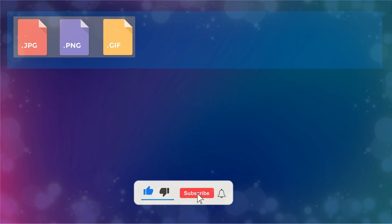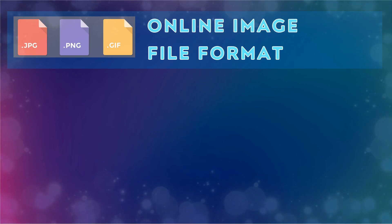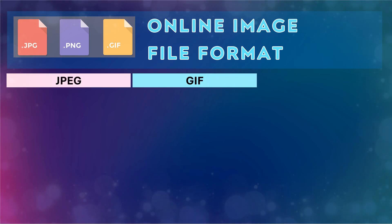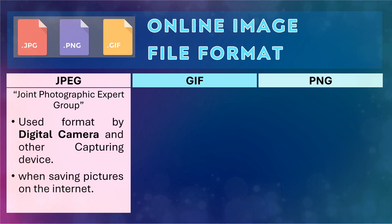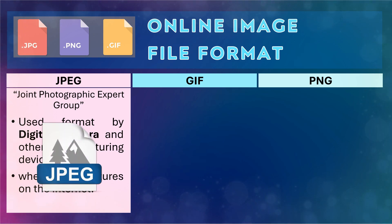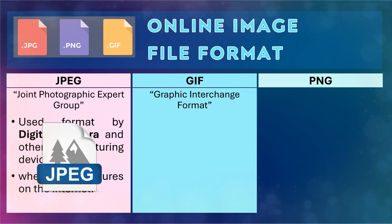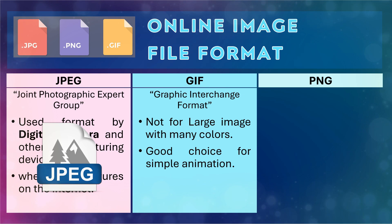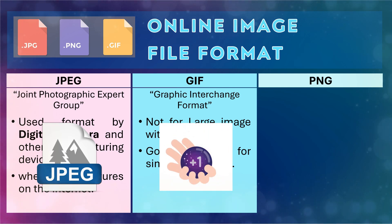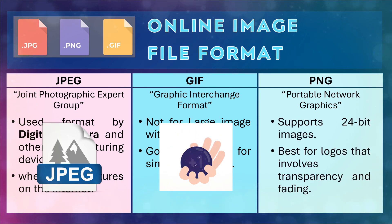Images have a format, and we must know what online image file formats are usually used. The commonly used are JPEG, GIF, and PNG. JPEG stands for Joint Photographic Expert Group — it is the most common format used by digital cameras and other capturing devices, and the common format when saving pictures on the internet. GIF stands for Graphic Interchange Format — not recommended for large images with many colors, the file sizes are very small and load very fast, and it is a good choice for simple animation. PNG stands for Portable Network Graphics — it supports 24-bit images and generates background transparency without jagged edges, and is the best format for logos that involve transparency and fading.